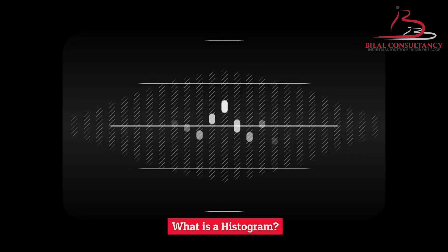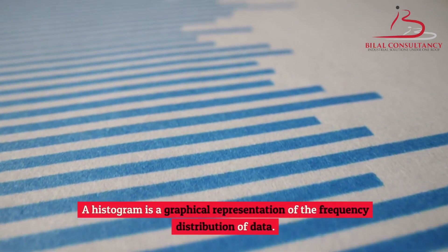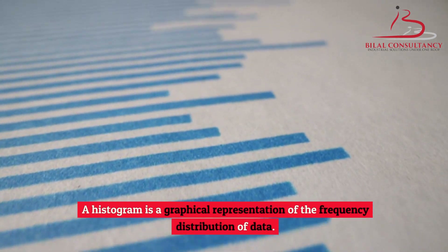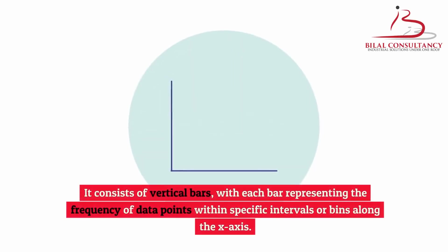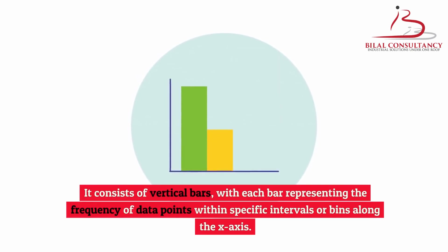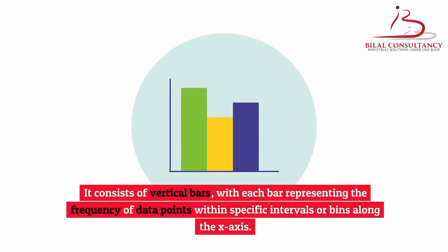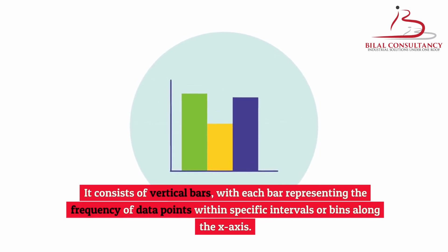What is a histogram? A histogram is a graphical representation of the frequency distribution of data. It consists of vertical bars, with each bar representing the frequency of data points within specific intervals or bins along the x-axis.